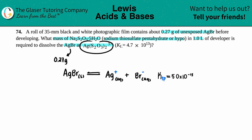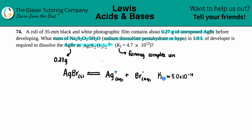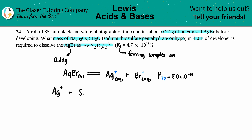Now I need to write another equation using the Kf value. Whenever you deal with a Kf value, you are always forming a complex ion. In this case the complex ion is Ag(S₂O₃)₂³⁻. We form it from its two components: the metal Ag⁺ plus the polyatomic S₂O₃²⁻, coming to equilibrium to form Ag(S₂O₃)₂³⁻.